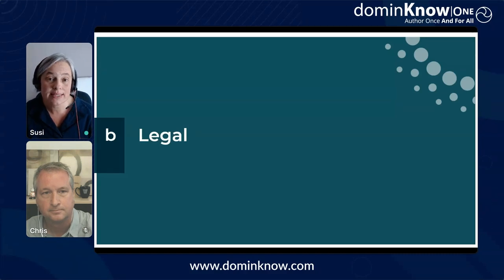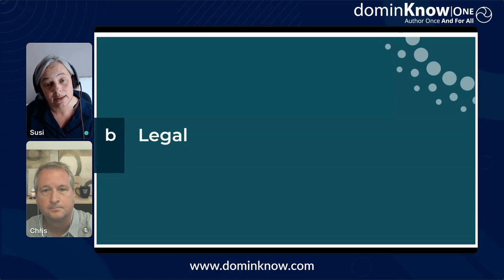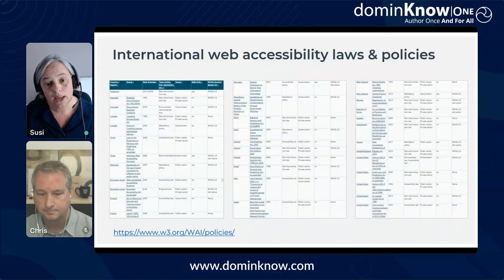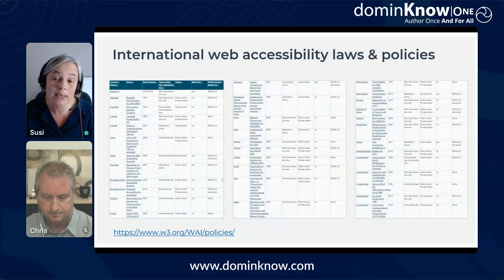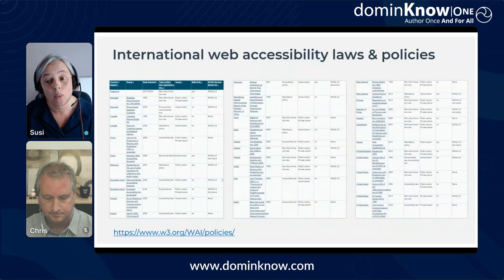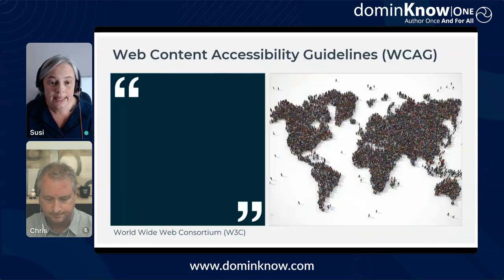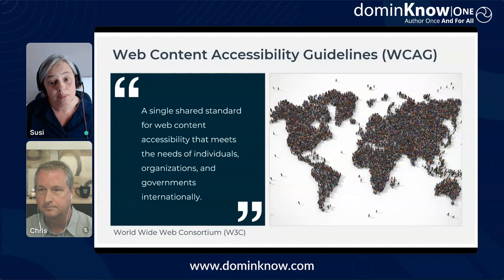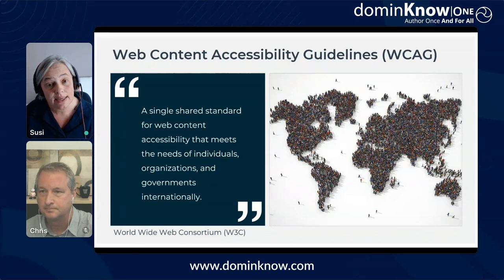Let's move on now to the legal case. This is where accessibility tends to most commonly sit for organisations, and I think that's a real shame because it promotes the mindset that accessibility is a risk and a constraint rather than an opportunity. Looking at an overview of international web accessibility laws and policies from W3C, a common theme is that most legislation is underpinned by the Web Content Accessibility Guidelines, or WCAG. The W3C state that WCAG standards are a single shared standard for web content accessibility that meets the needs of individuals, organisations and governments internationally. Meeting accessibility standards is a legal requirement for many organisations and is increasingly considered best practice for everyone else.